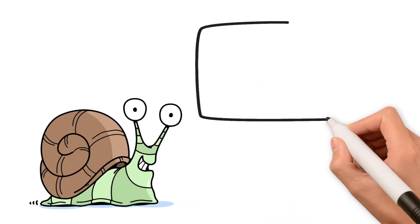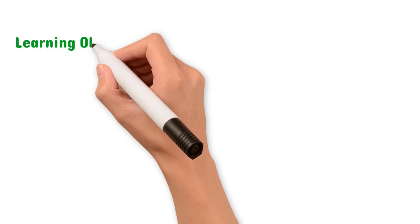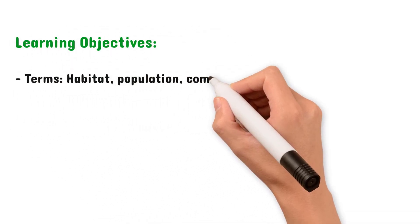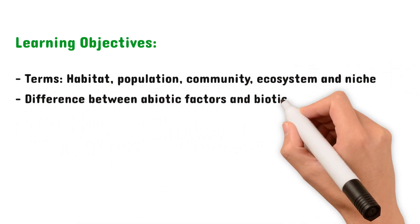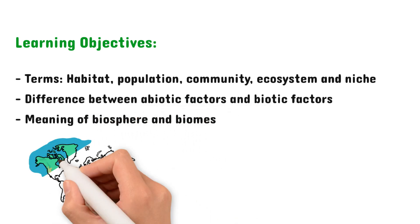Welcome to Brilliant Biology! Today we're diving into Topic 5B1: What is Ecology? By the end of this video, you should learn what is meant by the terms habitat, population, community, ecosystem, and niche, the difference between abiotic factors and biotic factors, and the meaning of biosphere and biomes.